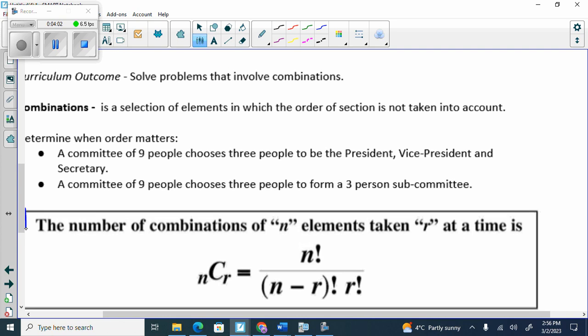So combination is a selection of elements in which the order of the selection is not taken into account. That's huge.